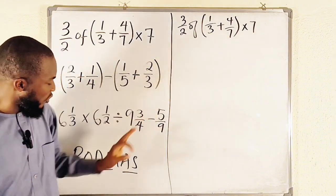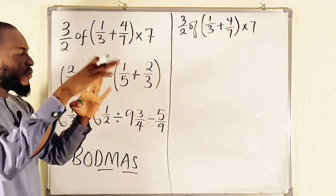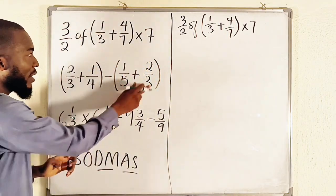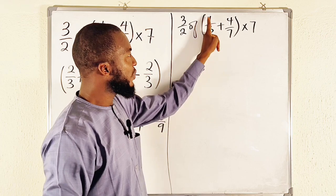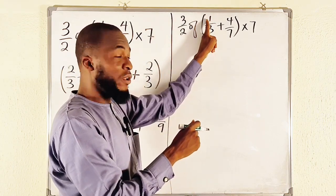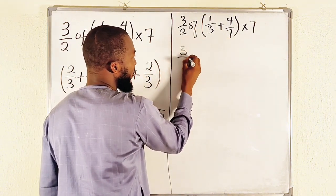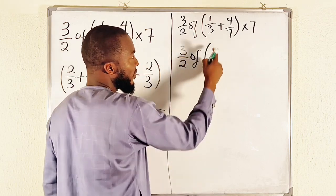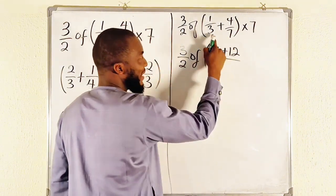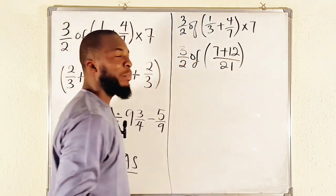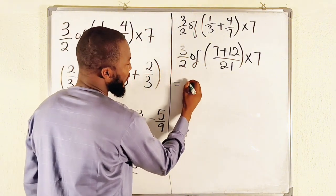Let us simplify the bracket before we move on. I'm going to show you different ways of adding or subtracting fractions. The first method is the butterfly method. You cross-multiply: take the numerator of the first fraction and multiply by the denominator of the second. So we keep 3 divided by 2 constant. This gives us 1 times 7 equals 7, plus 4 times 3 equals 12, divided by 3 times 7 equals 21. Then multiply by 7.